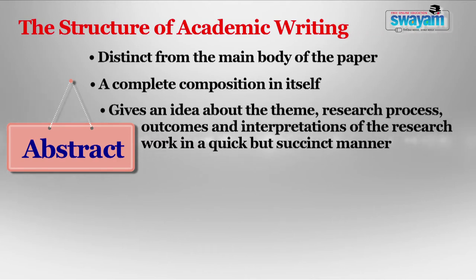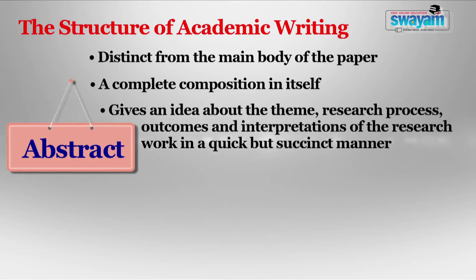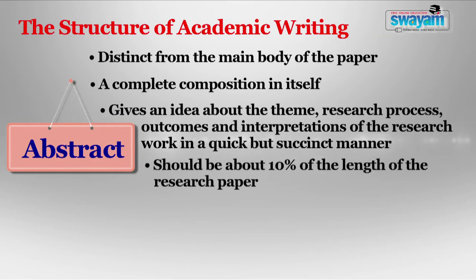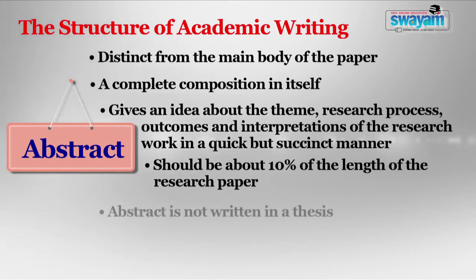Hence, it is important to write such a paragraph as is short but self-sufficient, and by reading it, the reader gets a fairly good idea about the theme, research process, outcomes, and interpretations of the research work in a quick but succinct manner. For writing the abstract, we have to write brief statements demonstrating the purpose of research, aims, hypothesis, research questions, research methodology, data collection tools, and experiment details. Findings, outcomes, and results followed by conclusions are also mentioned in the abstract, but discussion and interpretation of results are not given in detail. The main aim is to compress the paper into one short paragraph. The length is determined by professional journals; in the absence of any clear word limit, an abstract should be about 10% of the length of the research paper. It is advisable to write the abstract only after the completion of paper writing. Abstract is not written in thesis.